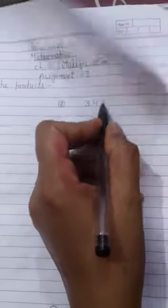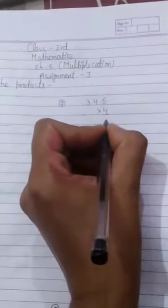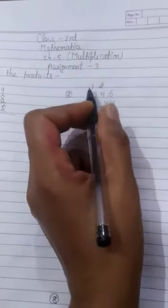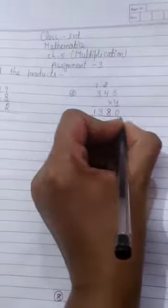Question number 2. 4 times 5 is 20. 0 is here and 2 is here. 4 times 4 is 16, 16 plus 2 is 18. We will write 8 here and 1 here. 4 times 3 is 12, 12 plus 1 is 13. 1380 is the answer.